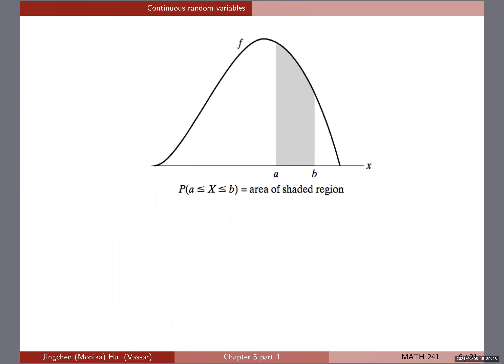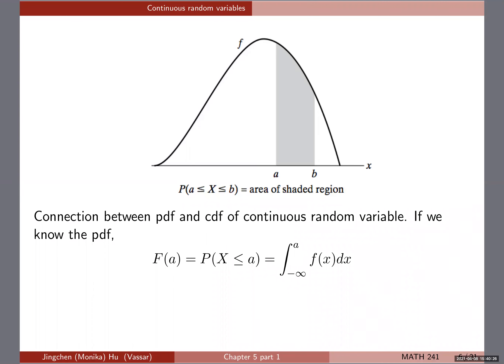Now let's take a closer look at how we understand what the CDF and PDF are doing. Earlier we defined the PDF and showed that to get probabilities you integrate over a given set B. The connection between PDF and CDF is similar to the discrete case: if you know the PMF you can get the CDF, and vice versa. The PDF and CDF contain essentially the same amount of information — if you know one you can always get to the other.